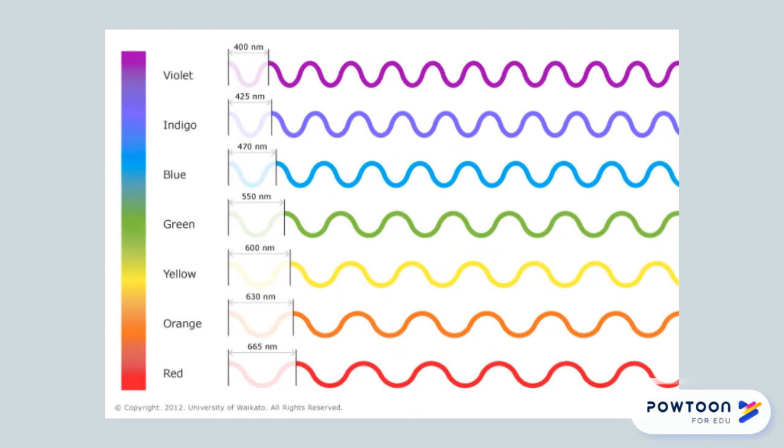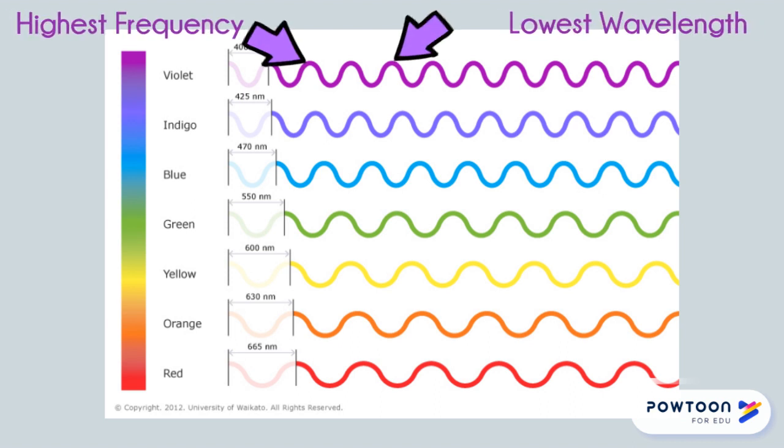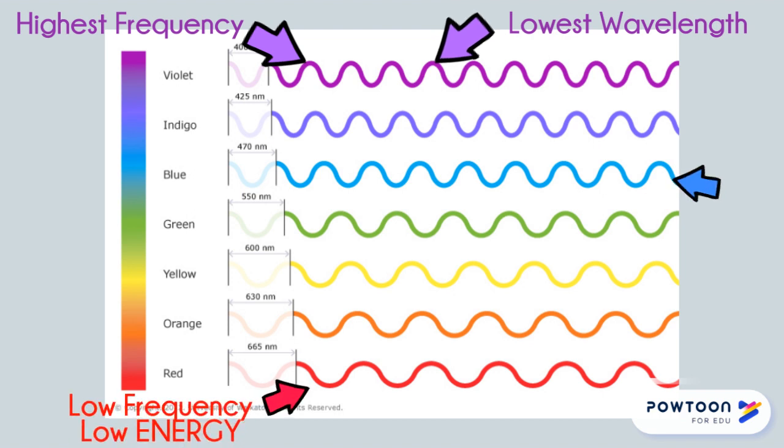This picture shows you different wavelengths of visible light. Notice that as the frequency increases, the wavelength decreases. Red light is a low frequency wave and therefore is a low energy wave. Blue light has a higher frequency and also is higher energy.